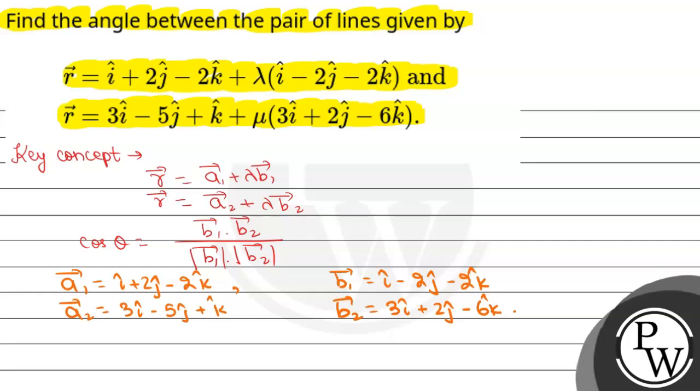Now if we find mod of b1, under root 1 squared is 1, minus 2 squared is 4, plus 4, the value is 3.